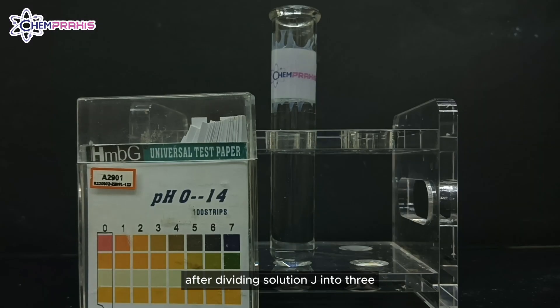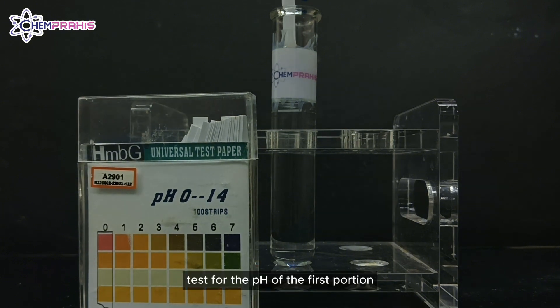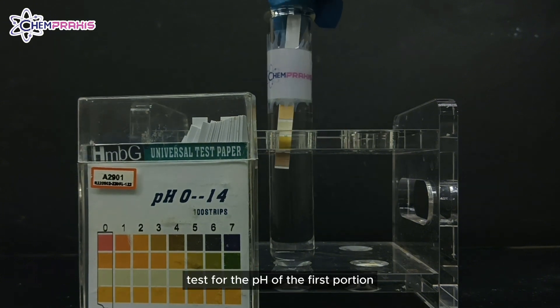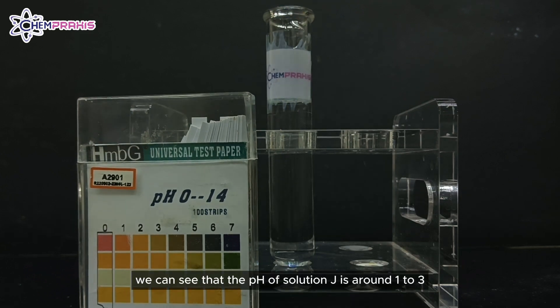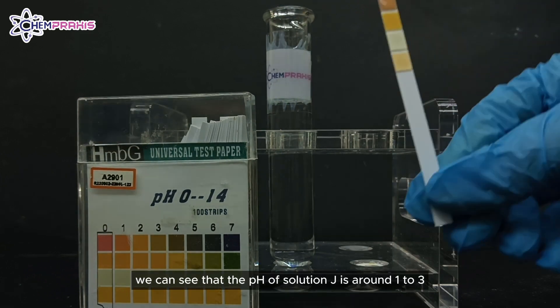After dividing solution J into three approximately equal portions, test for the pH of the first portion. Based on the colour change, we can see that the pH of solution J is around 1 to 3.